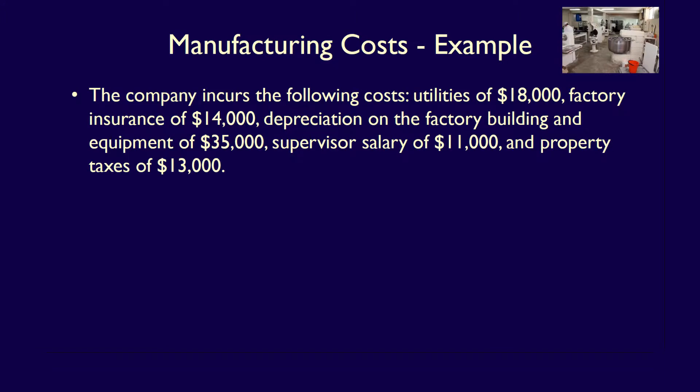Camilla also incurs the following overhead costs: utilities of $18,000, factory insurance of $14,000, depreciation on the factory building and equipment of $35,000, supervisor salary of $11,000, and property taxes on the factory of $13,000. All of these costs relate to overhead because they are indirect — part of the production process but not directly traceable to the product.